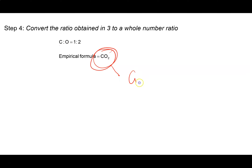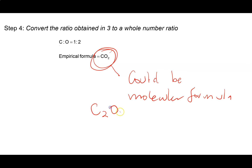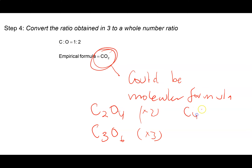Now this could be the molecular formula, or it could be the empirical formula with the molecular formula being a whole number multiple of that — times 2, times 3, or C4O8 for times 4, and so forth. So it could be the molecular formula CO2, but of course it could just be the empirical formula with the molecular formula being different.